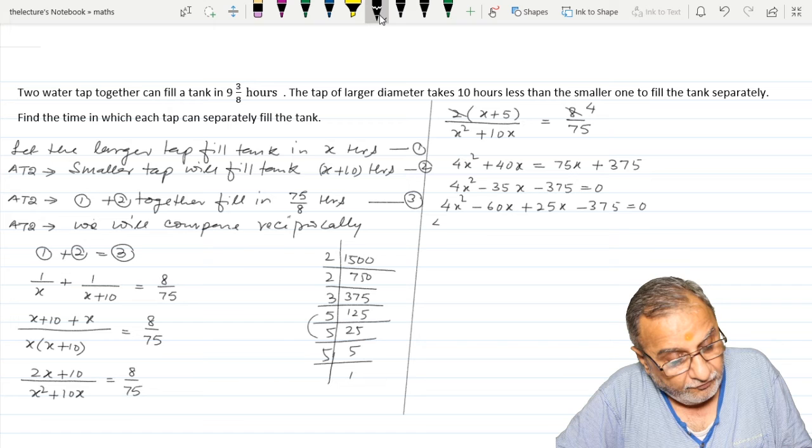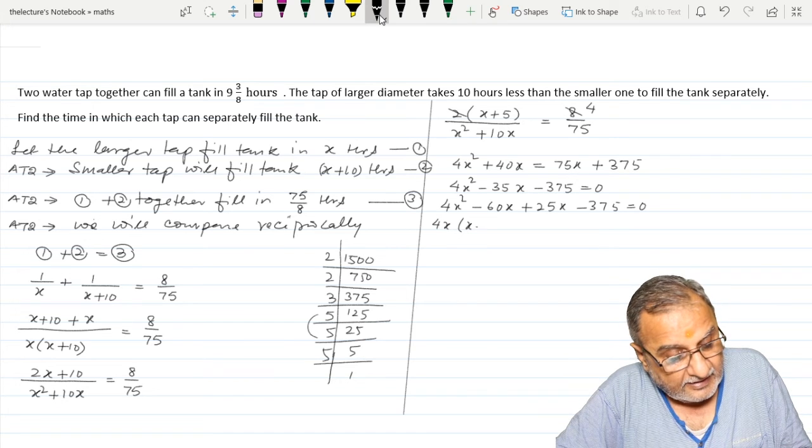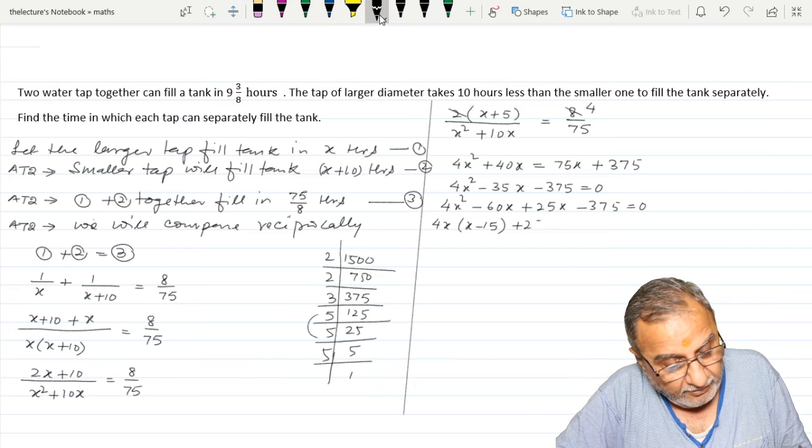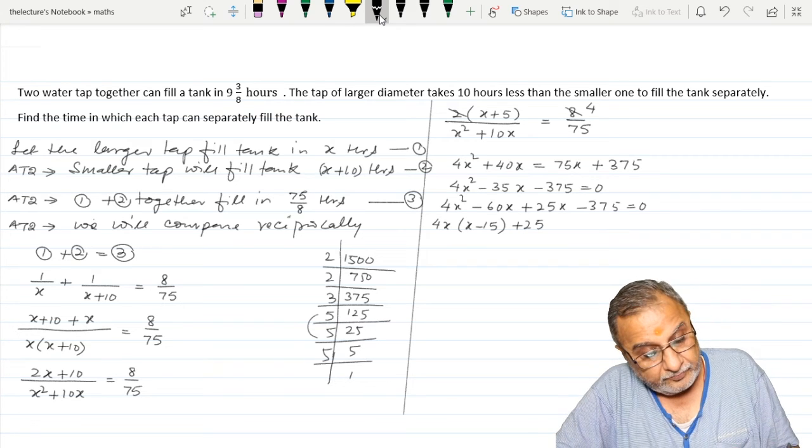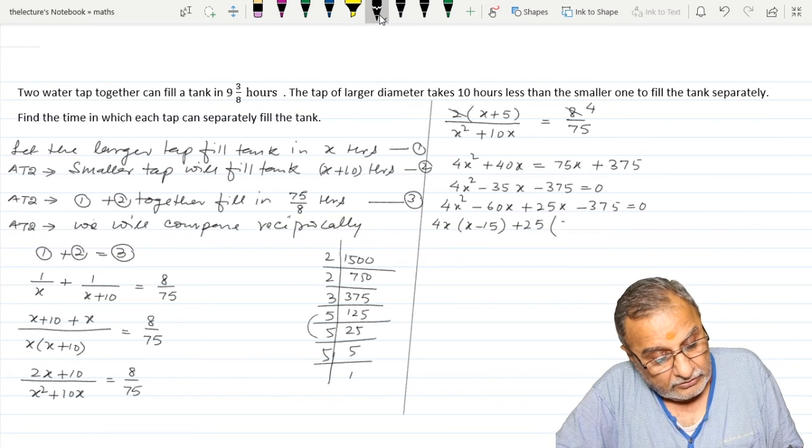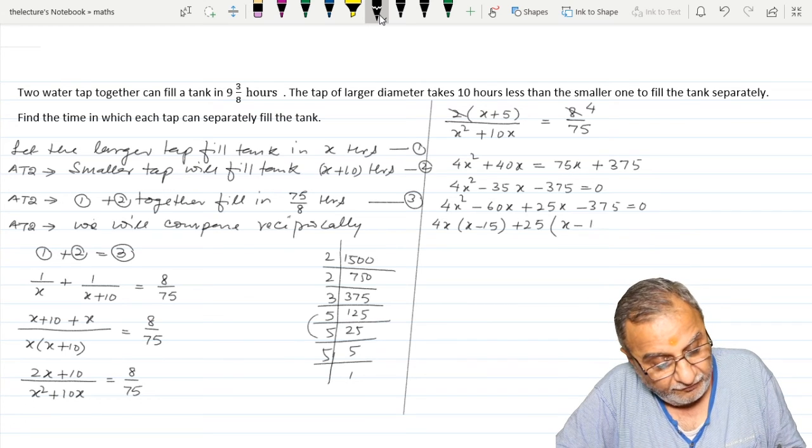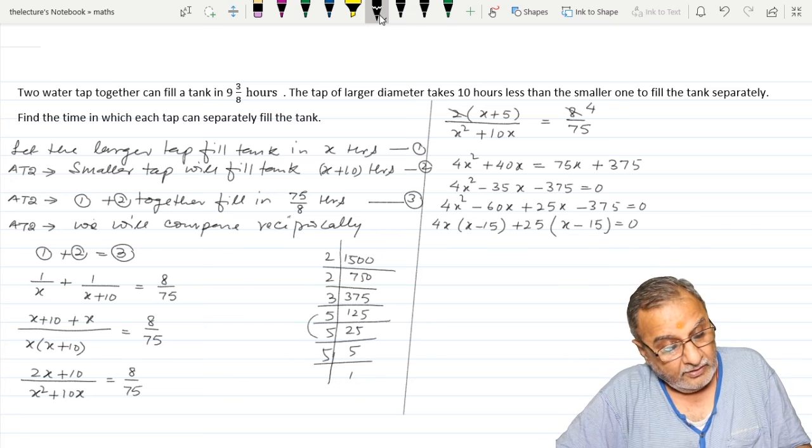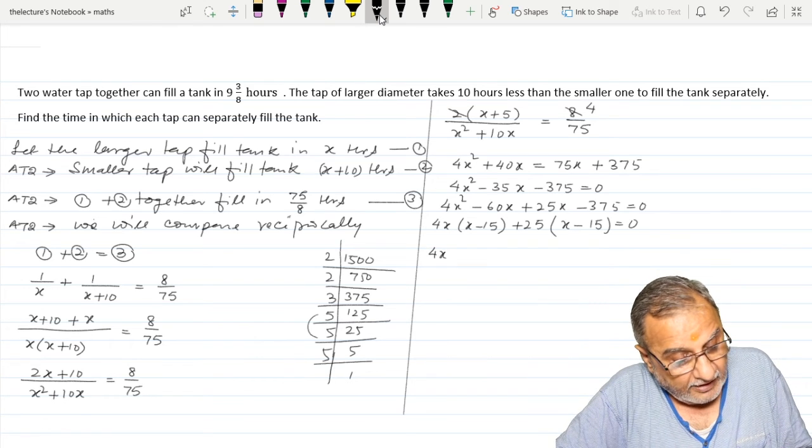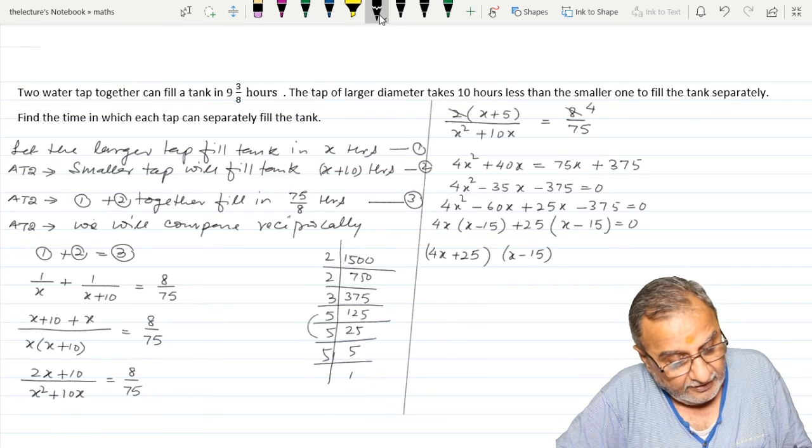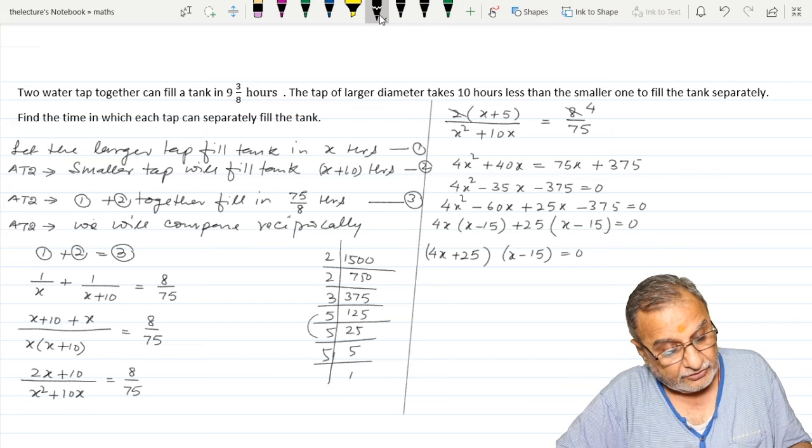Now I have taken common 4X, that is X minus 15, and I have taken here 25. So X minus 15, 375 divided by 25, that is 15, and that equals 0. So here, 4X plus 25 times X minus 15 equals 0.